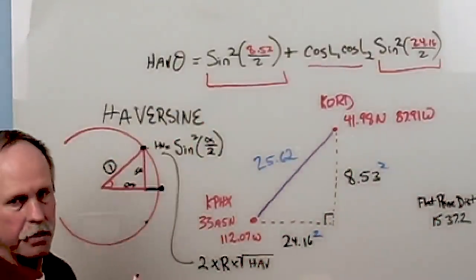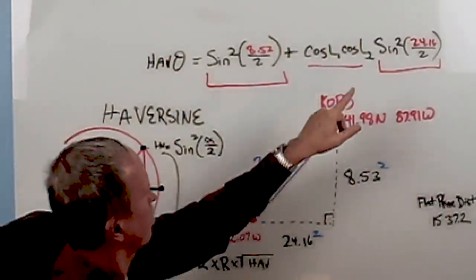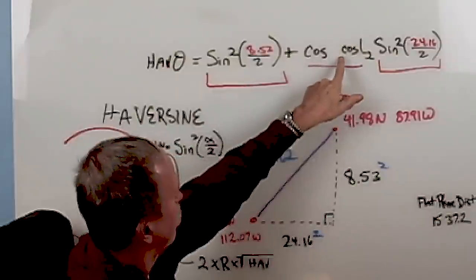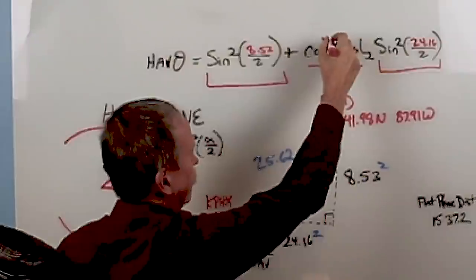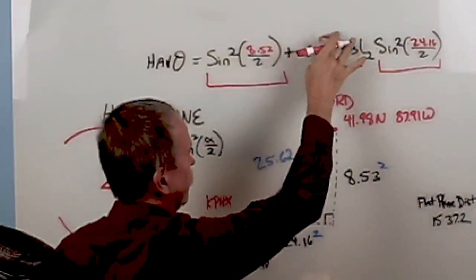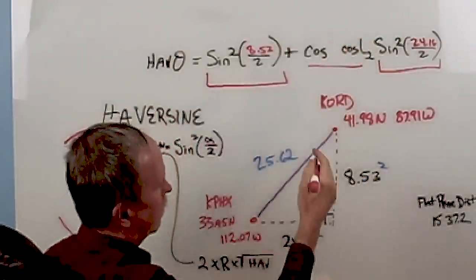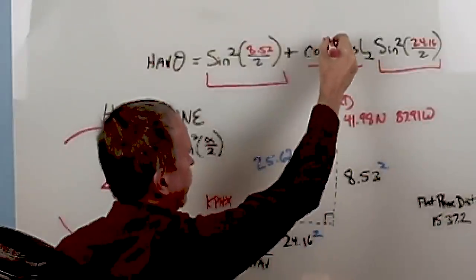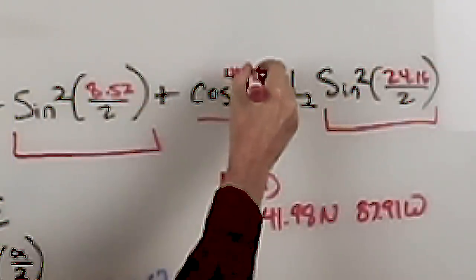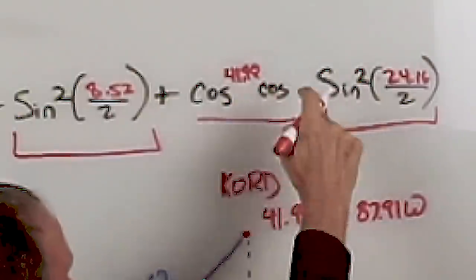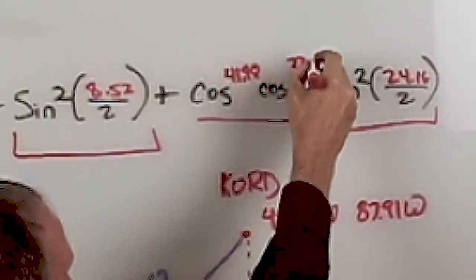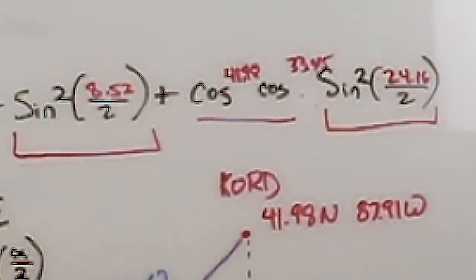What about these numbers here? Well, lat 1 is 41.98. And lat 2 is 33.45. Okay. So let's go ahead and shoot the math.